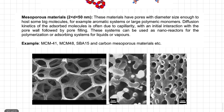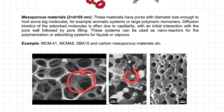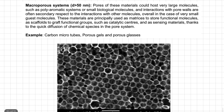The second type is mesoporous materials, with pore diameters greater than 2 nanometers but less than 50 nanometers. These materials have pores large enough to host bigger molecules such as aromatic systems or polymeric monomers. Diffusion kinetics of absorbed molecules is often due to capillarity, with initial pore-wall interaction followed by pore filling. These systems can be used as nano-reactors for polymerization or as absorbing systems for liquids or vapors. Examples include carbon mesoporous materials.